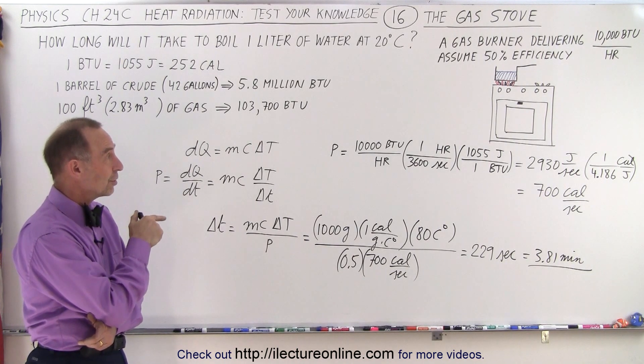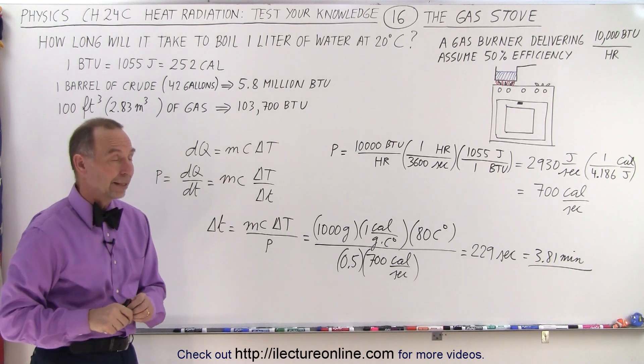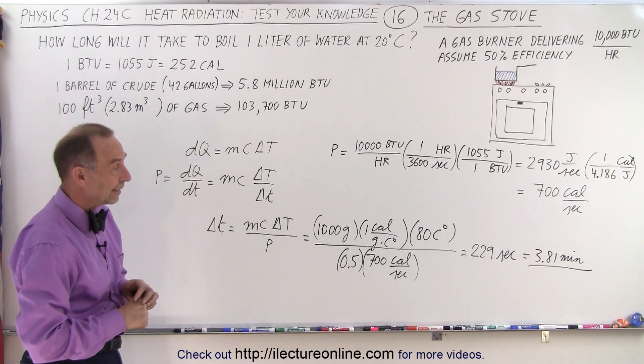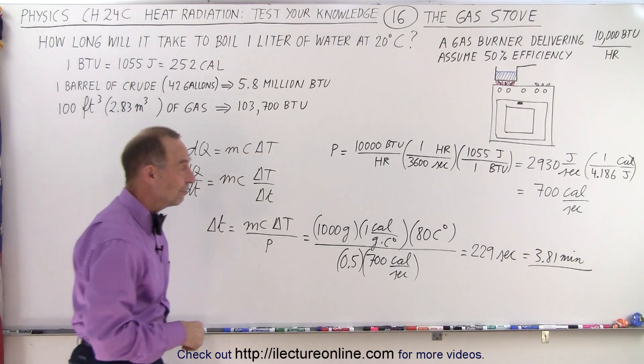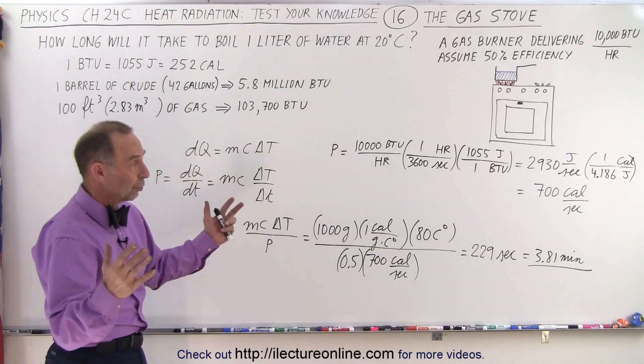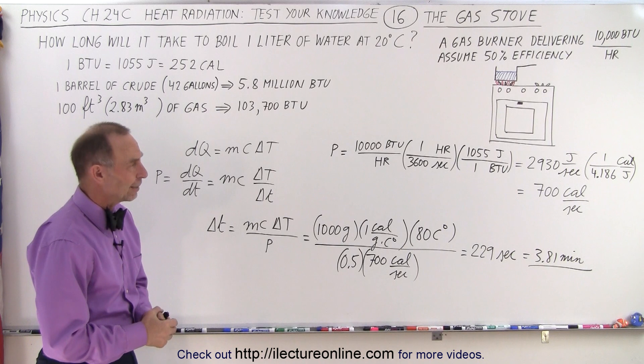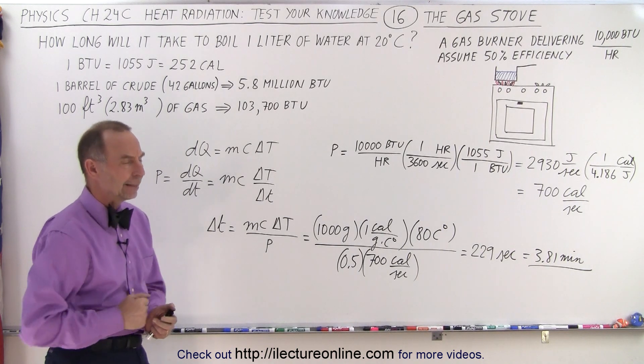Sounds like we're going to do one more video to see how much we would have to pay for the gas to heat that water. But you can see that it is difficult to give up the convenience of being able to boil one liter of water in less than 4 minutes. With a solar oven, a solar cooker, it will take well over an hour to do the same thing.